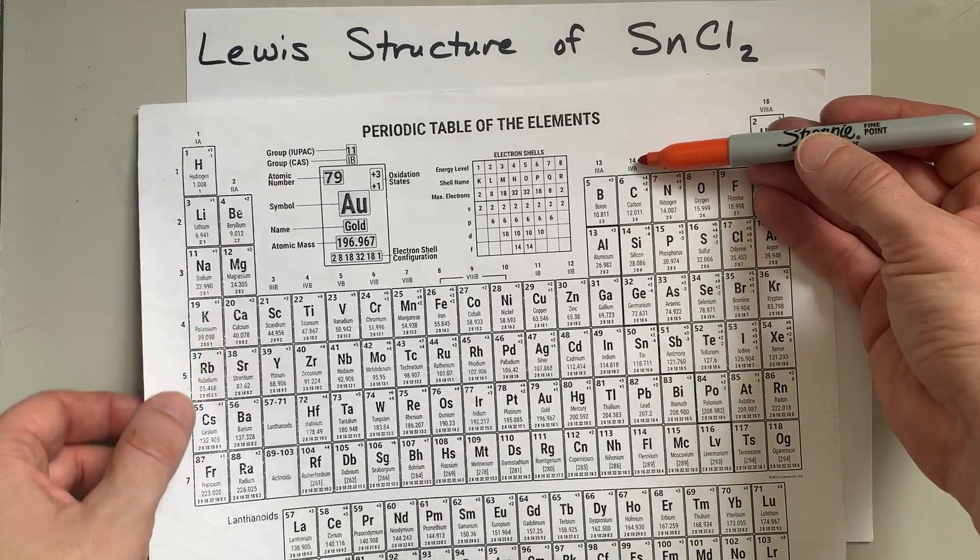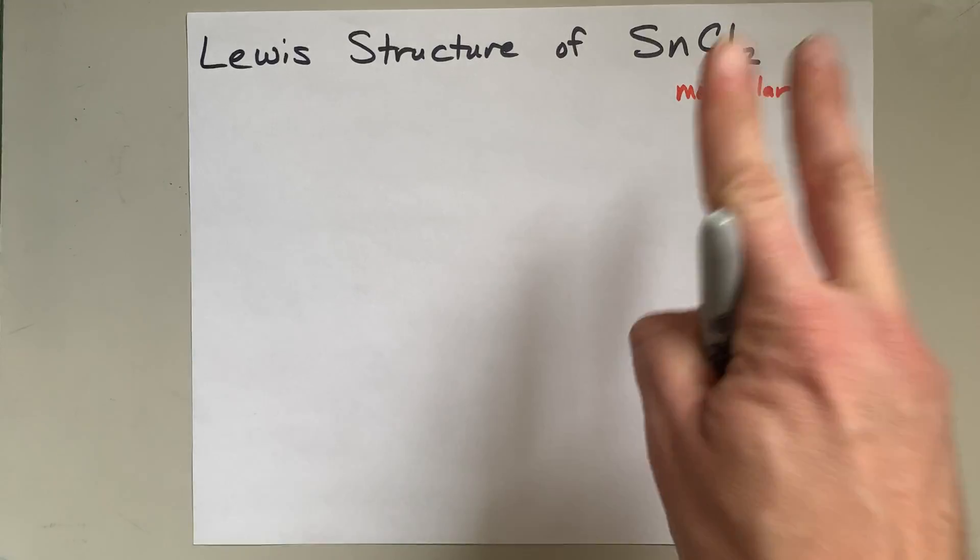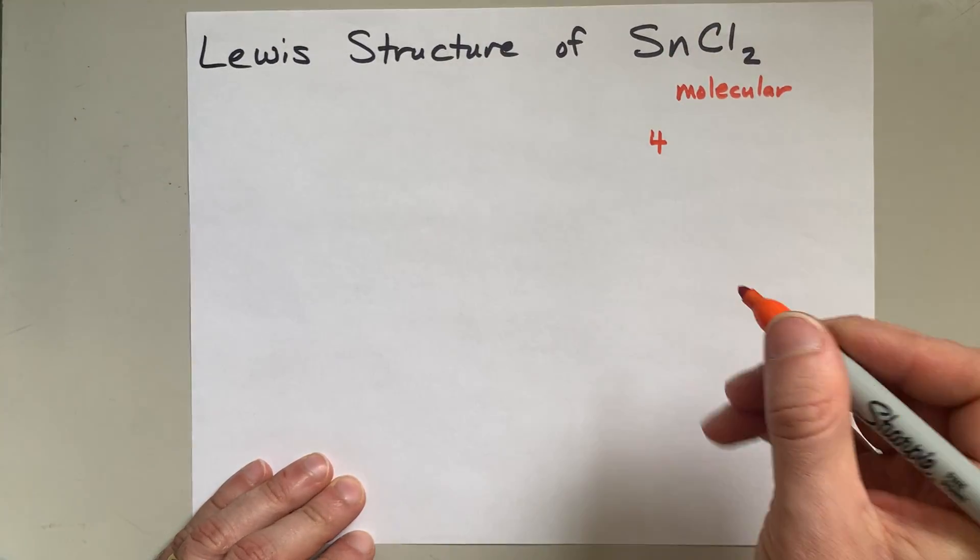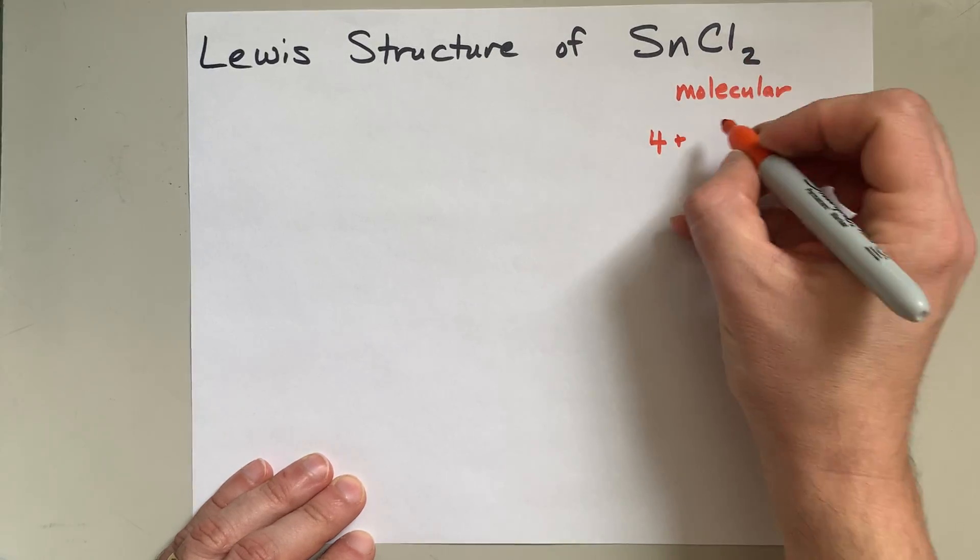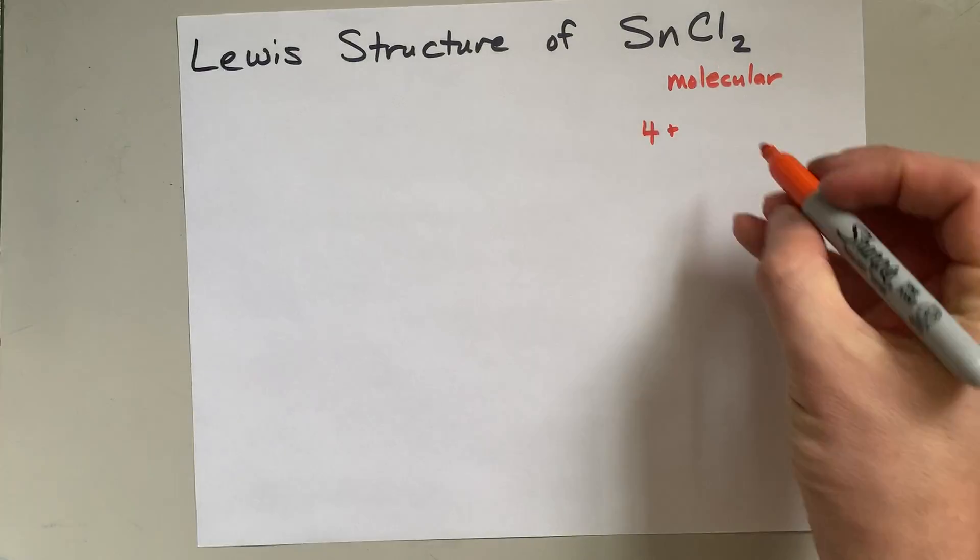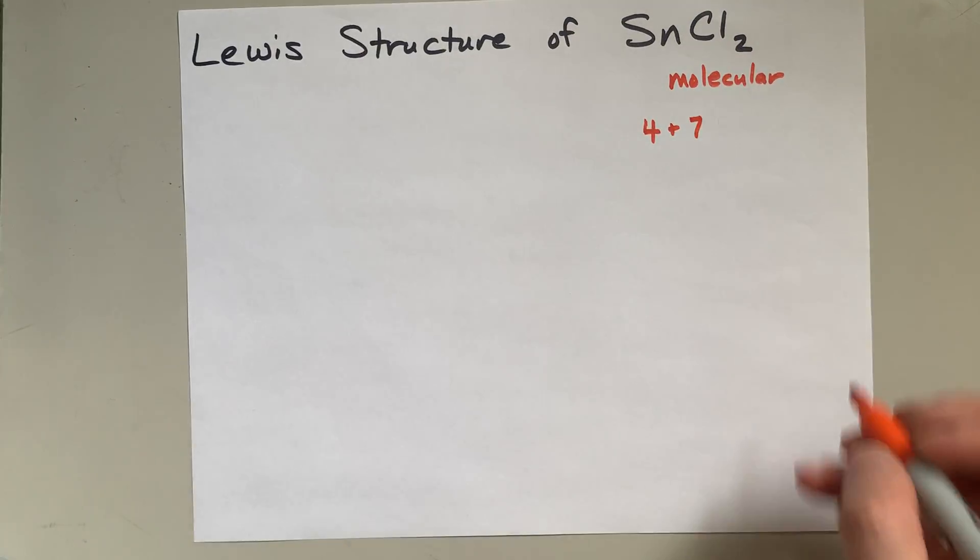Tin is in group 14, and so we're going to say it has four valence electrons before it starts sharing. And then chlorine is in group 17 of the periodic table, so it brings seven valence electrons each.